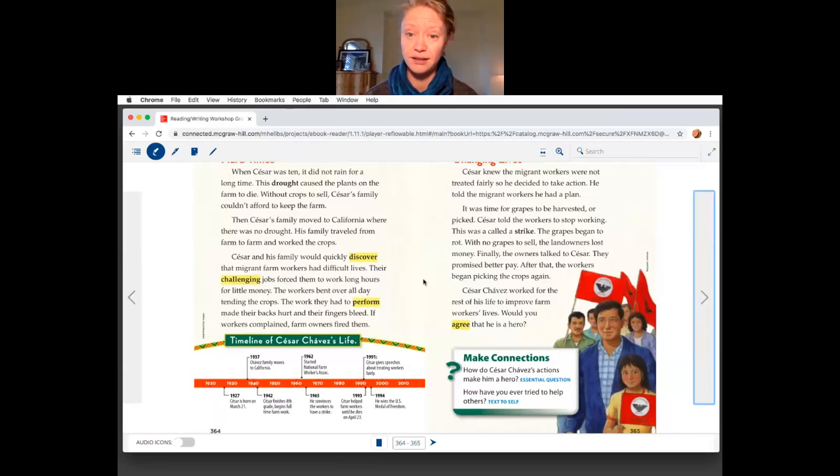The grapes began to rot. With no grapes to sell, the landowners lost money. Finally, the owners talked to Cesar. They promised better pay. After that, the workers began picking crops again.